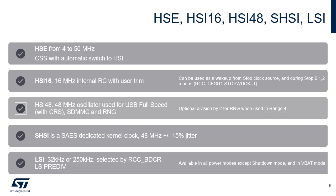This slide describes the features of five oscillators. The high-speed external oscillator provides a safe crystal system clock. The HSE supports a 4 to 50 MHz external crystal or ceramic resonator, as well as an external source in bypass mode. A clock security system automatically detects an HSE failure. In this case, a non-maskable interrupt is generated and a brake input can be sent to the timers, in order to put critical applications such as motor control in a safe state. When an HSE failure is detected, the system clock is automatically switched to an internal oscillator, either HSI16 or MSIS, so that the application software does not stop in the case of crystal failure.